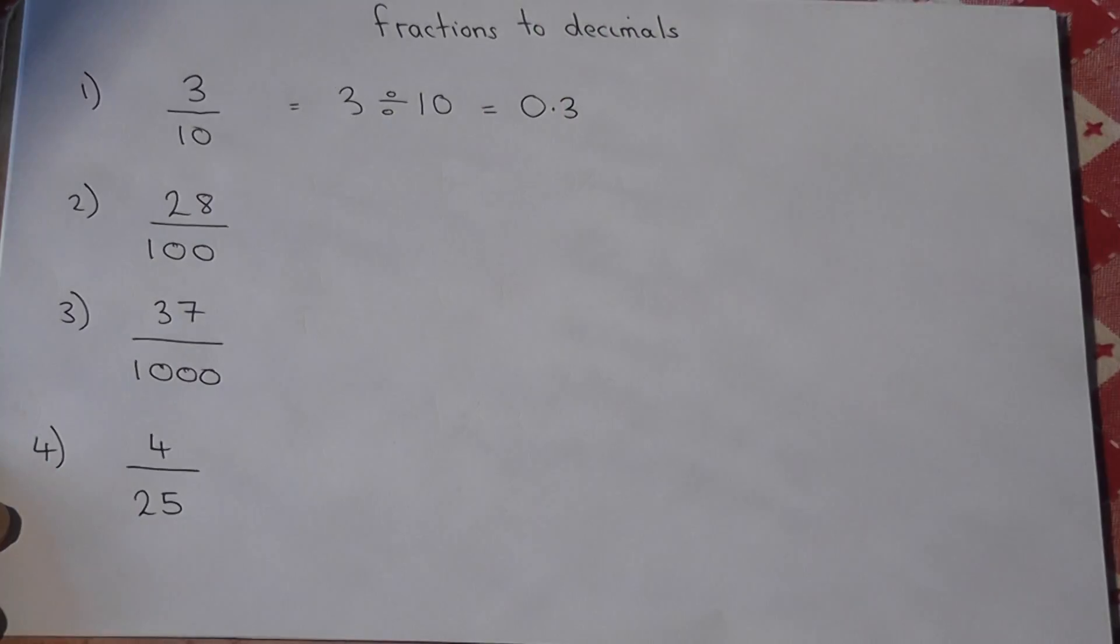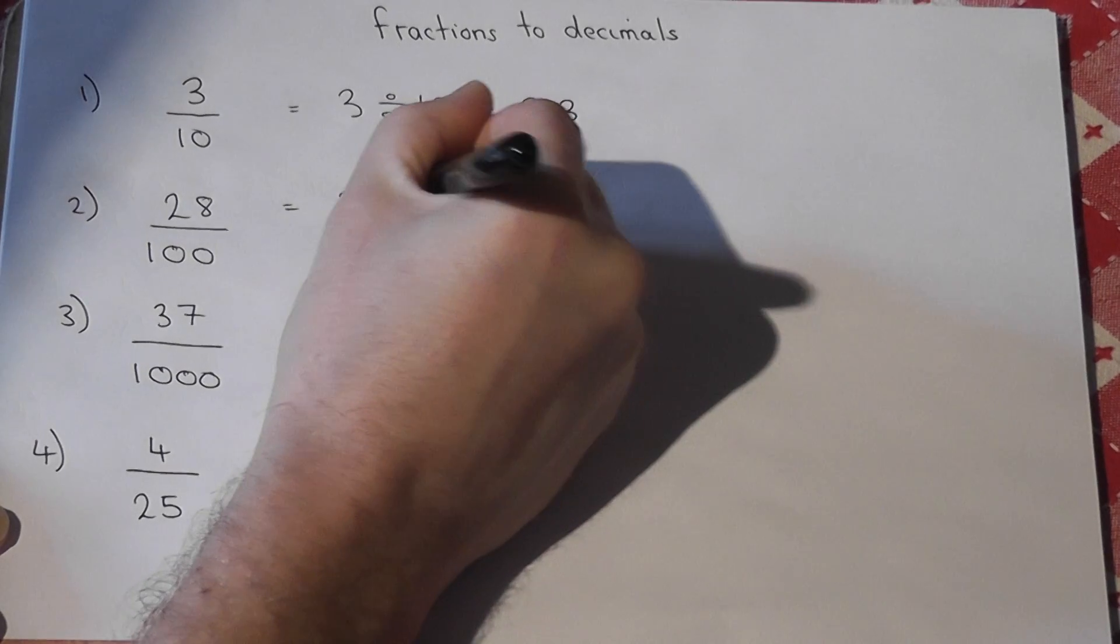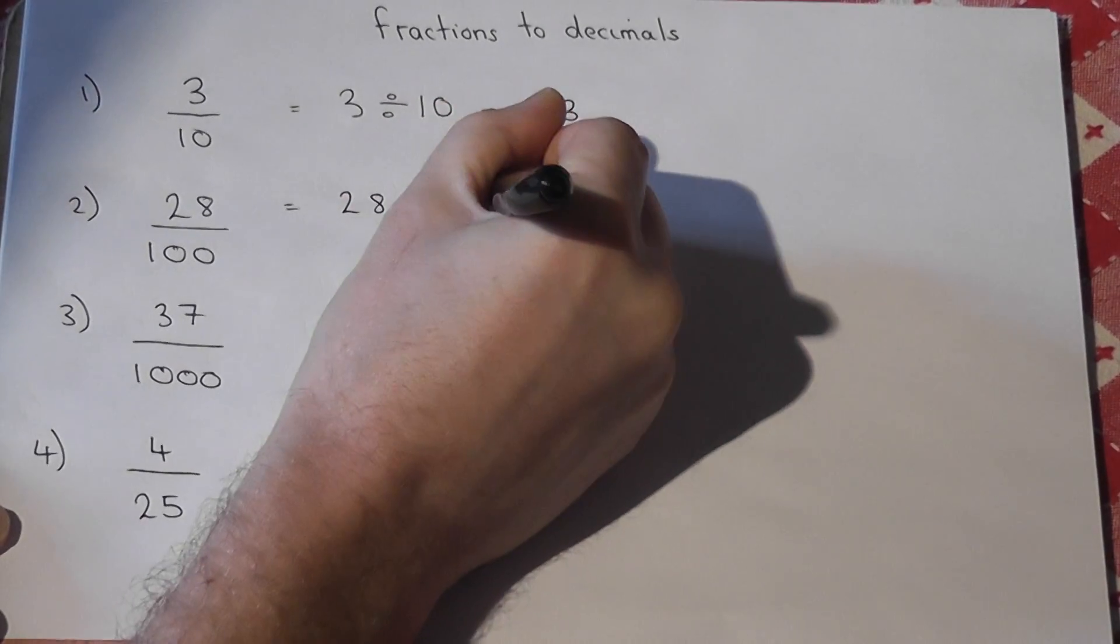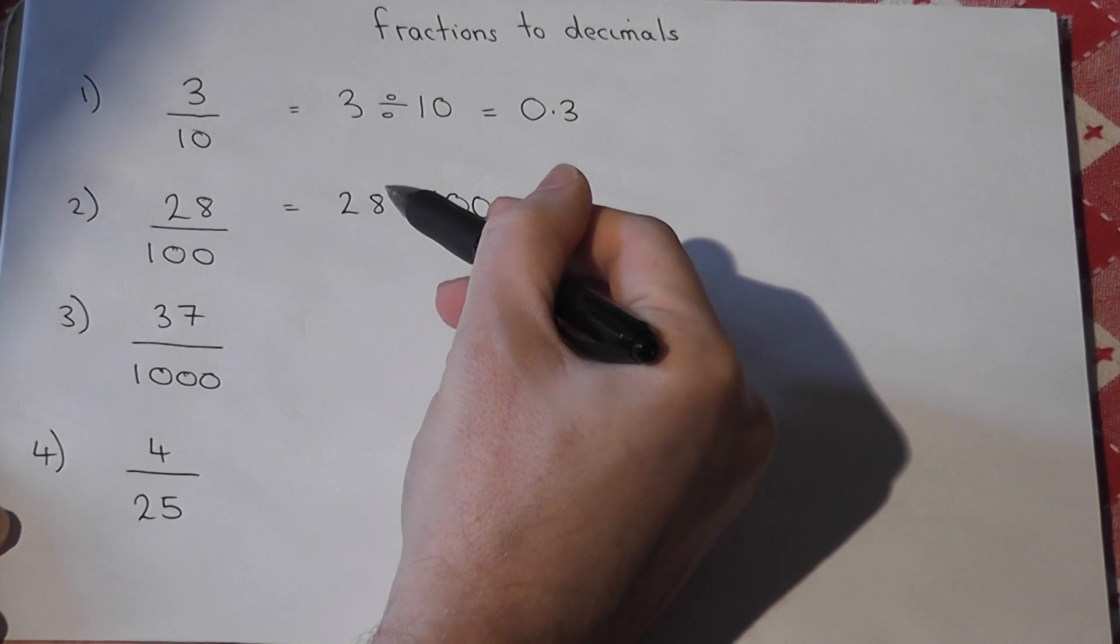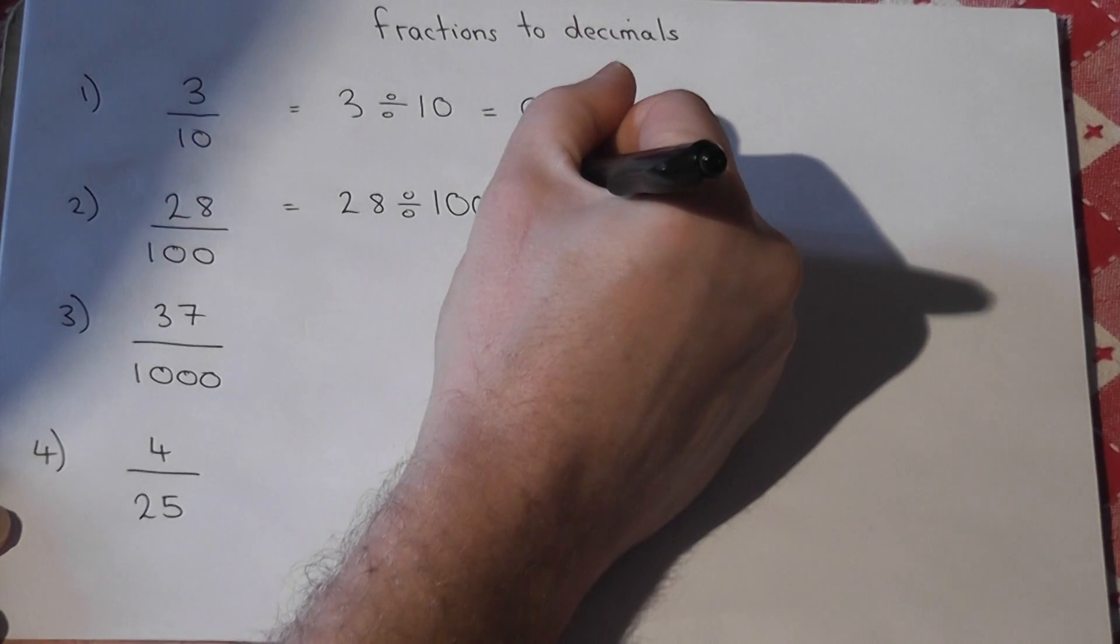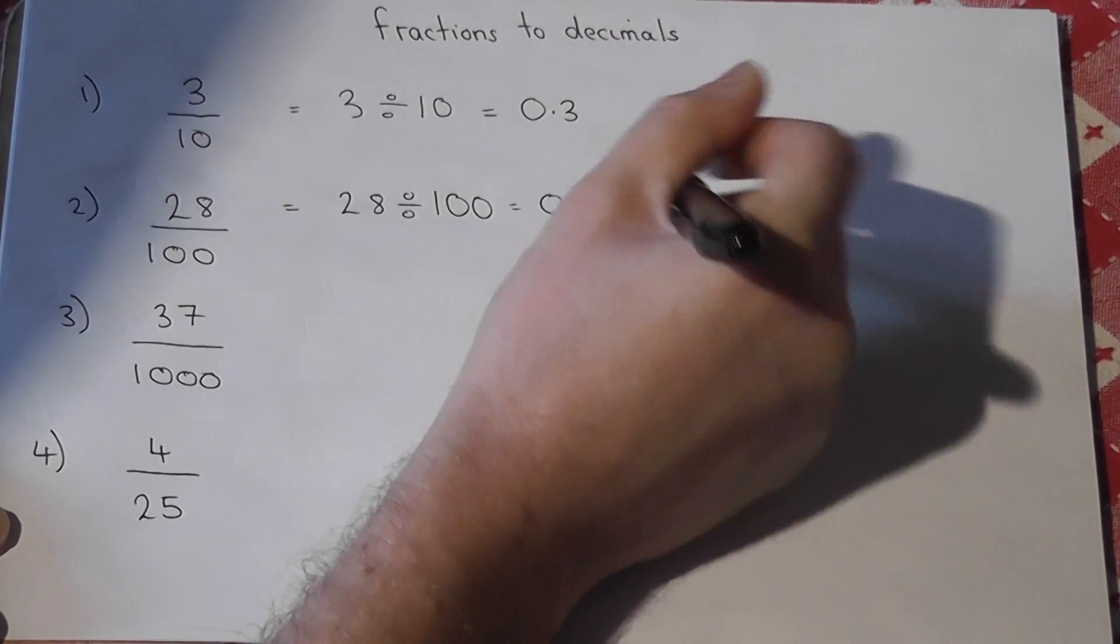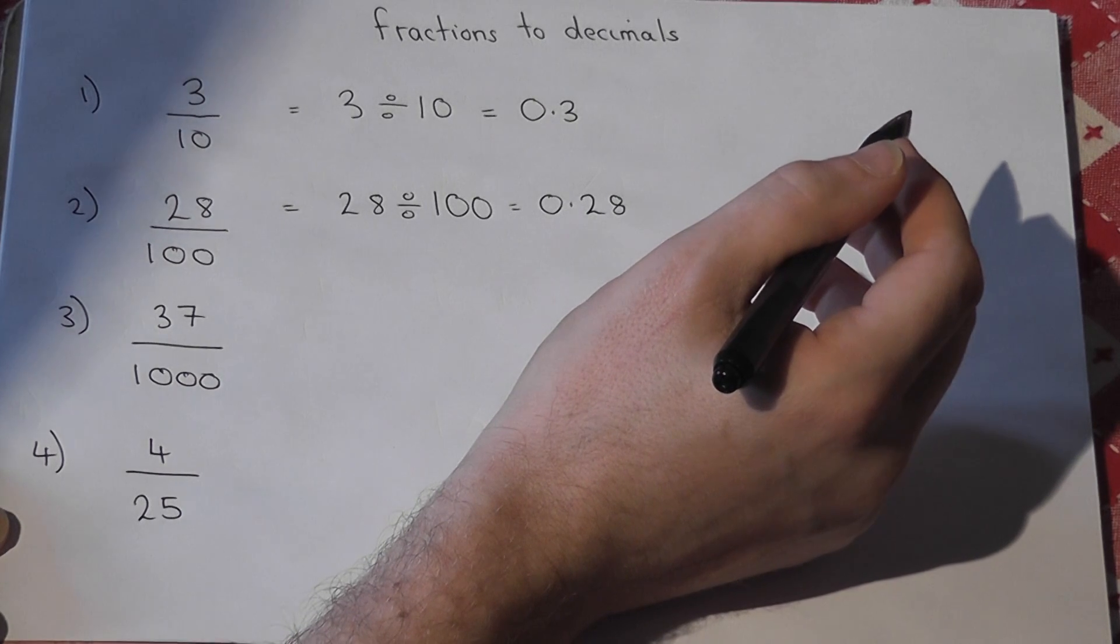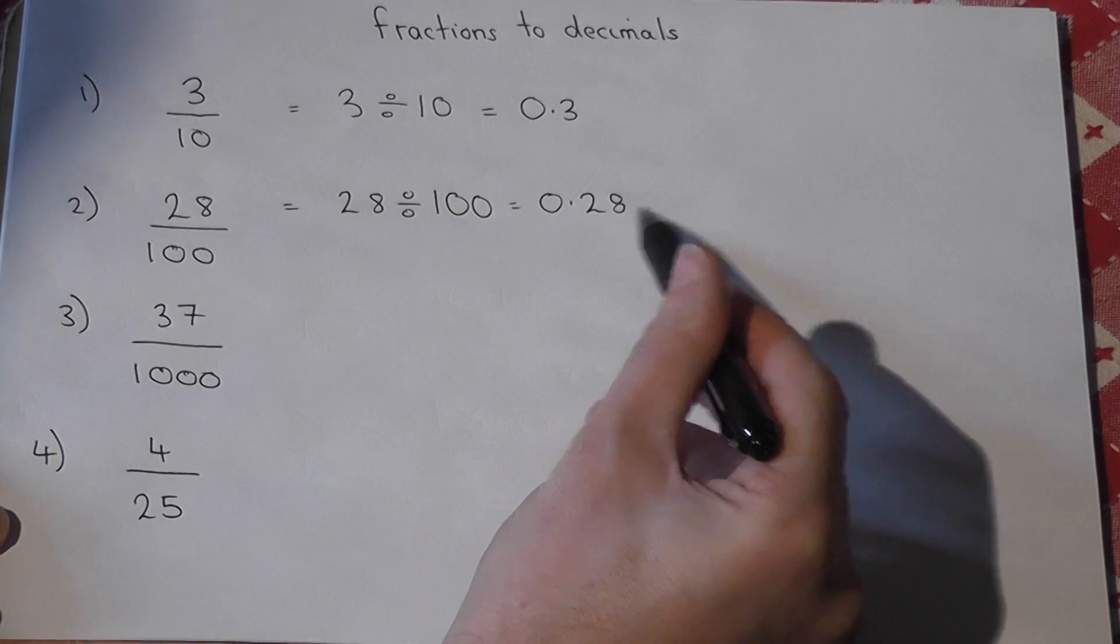So the second one, 28 hundredths, means 28 divided by 100. So this now just moves two places to the right. So 28, one place is 2.8, two places is 0.28. So 28 over 100 is 0.28.